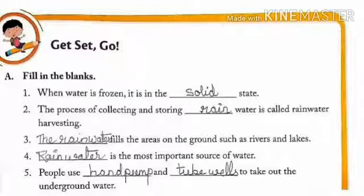Fill in the blanks. Number 1: When water is frozen, it is in the dash state. Answer: solid state. Number 2: The process of collecting and storing dash water is called rain water harvesting. Answer: The process of collecting and storing rain water is called rain water harvesting.